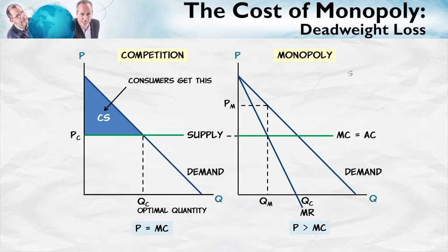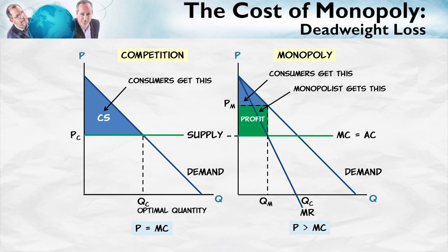Consumers, not surprisingly, get less under monopoly since the price is higher. Now, some of what consumers lose is transferred to the monopolist in terms of profit. As far as an economist is concerned, at least someone is getting these gains from trade, so the transfer is neutral. What's bad, however, is that total welfare falls under monopoly because no one gets this area — the deadweight loss.